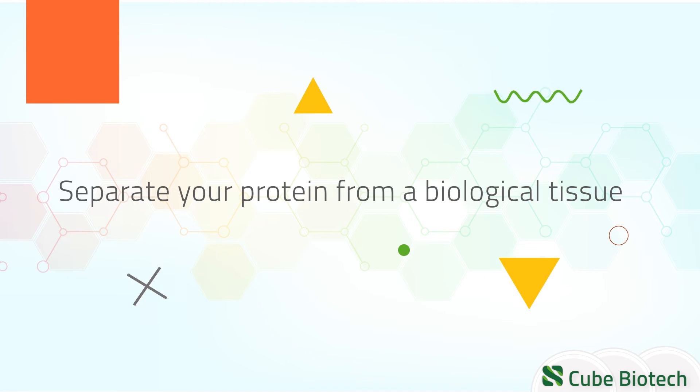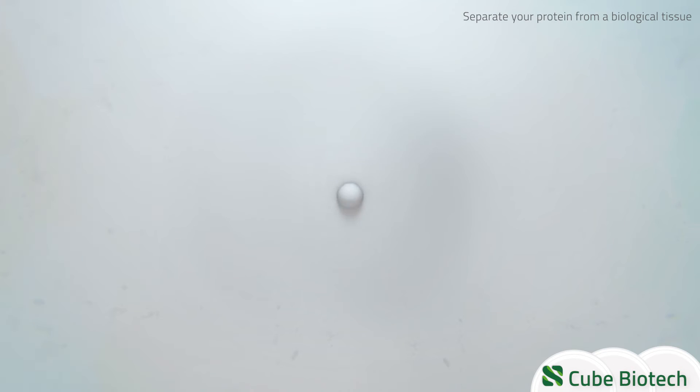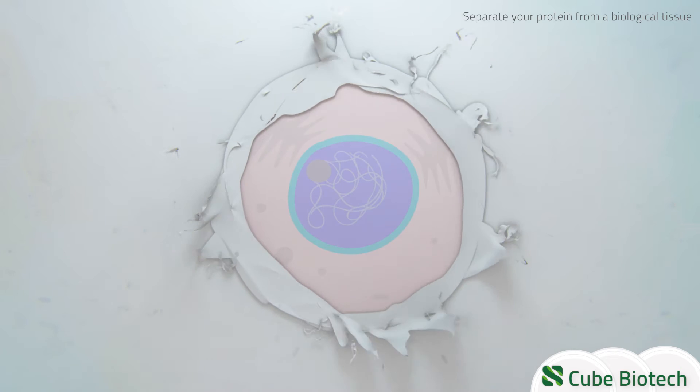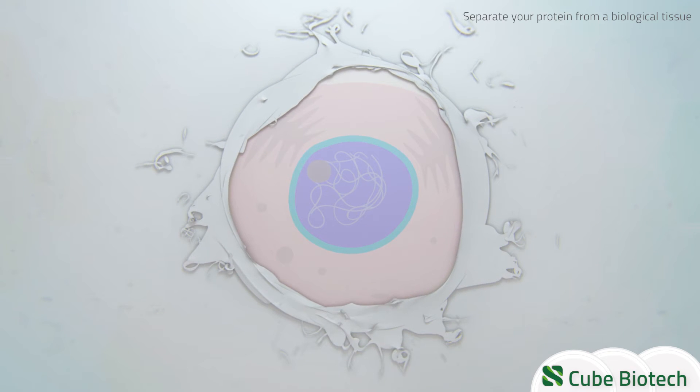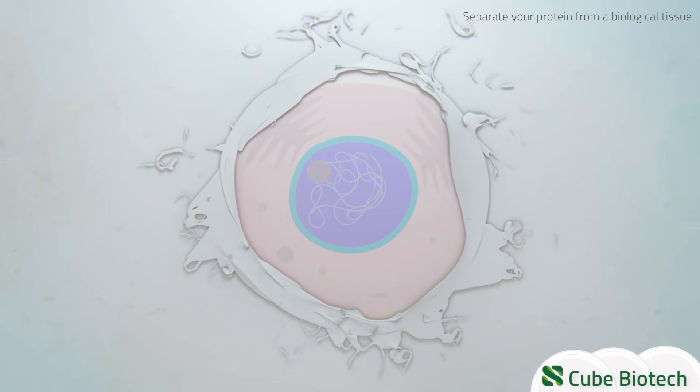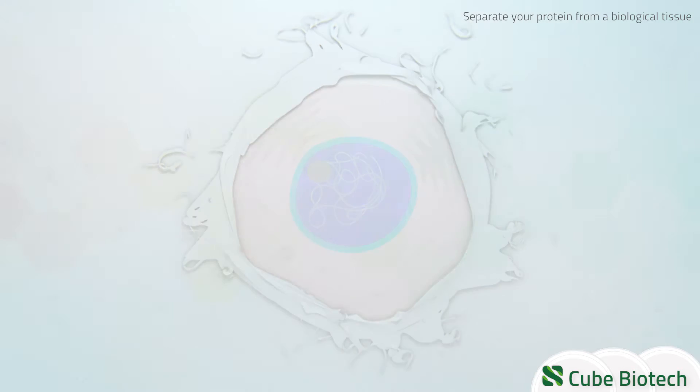Separate your protein from a biological tissue or culture. The protein purification process often begins with the destruction of the cells. This can be done through chemical methods such as osmotic shock or mechanical methods such as ultrasonification. Afterwards, larger fragments such as cell debris can be separated from the lysate by centrifugation.